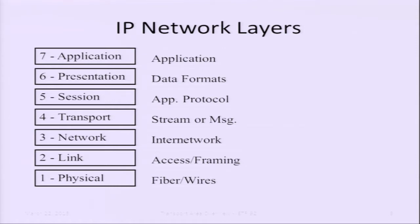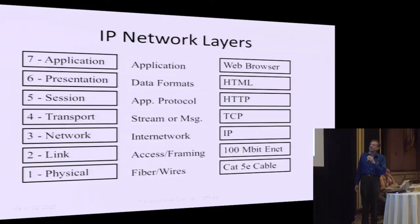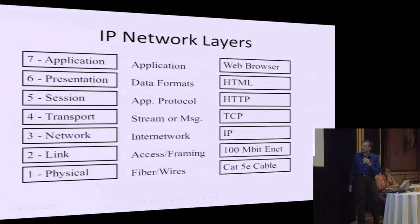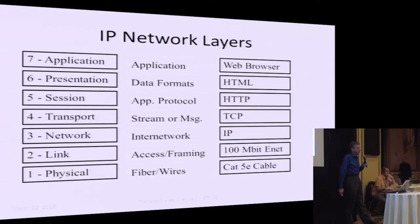Let's take a real example. Down at the bottom: fiber wires. If I plug this into the wall, Cat 5e cable. Link: 100 megabit Ethernet. Up to the network layer — this is where the IETF comes in. IP is a protocol that runs across all the links and can do networking across link technologies. Transport level: stream or message — message is the colloquial term for datagram. Here it's TCP. We need a session protocol: HTTP. Data formats: HTML. And finally, the web browser. Here's a whole stack running inside a web browser.